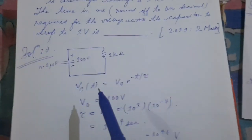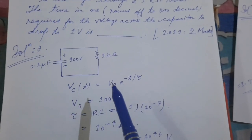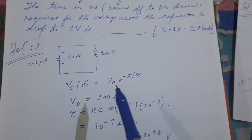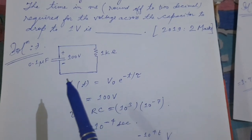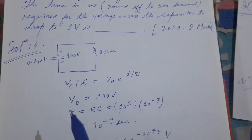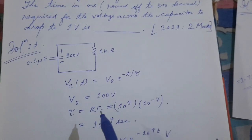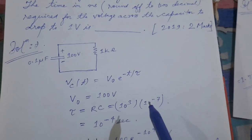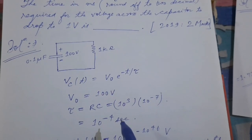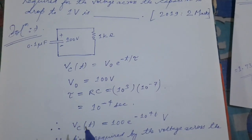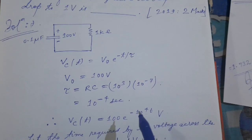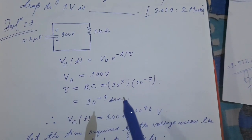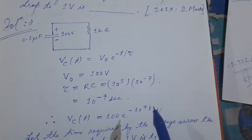Since this is an RC circuit, we can write: Vc(t) = V₀ · e^(−t/τ), where τ is the time constant, t is the instantaneous time, V₀ is the initial voltage, and Vc(t) is the capacitor voltage at time t. The time constant τ = RC = 1×10³ × 0.1×10⁻⁶ = 10⁻⁴ seconds. Therefore, Vc(t) = 100 · e^(−10⁴·t) volts.